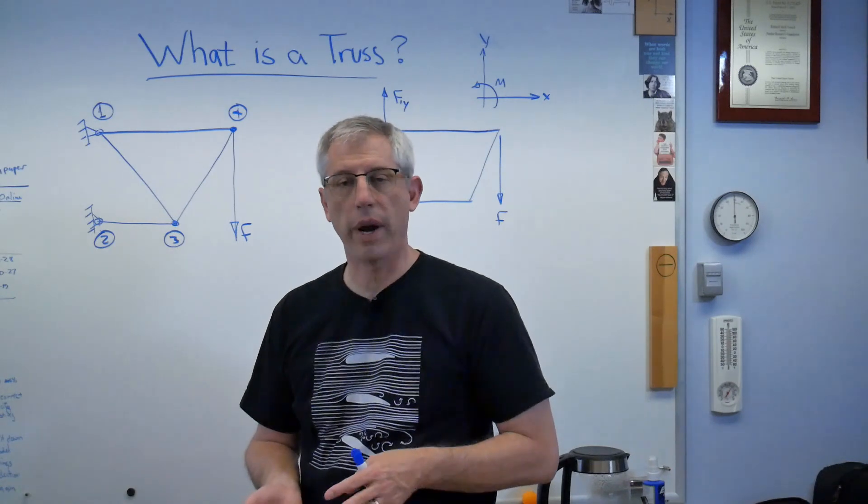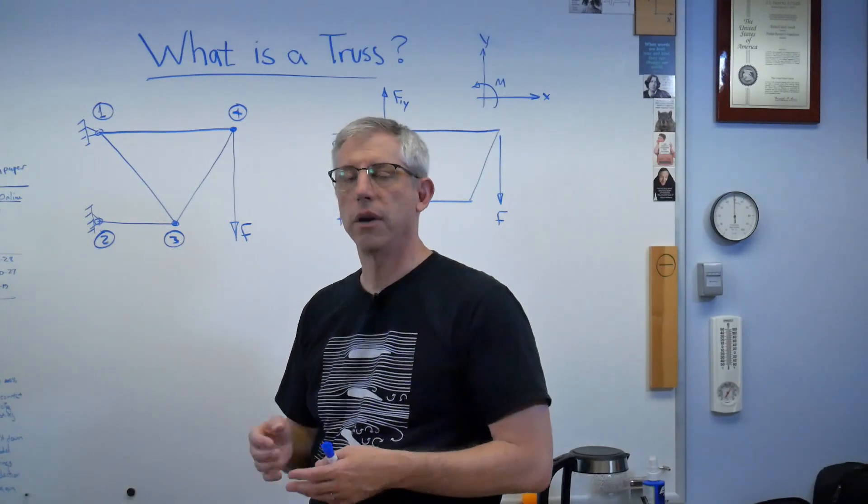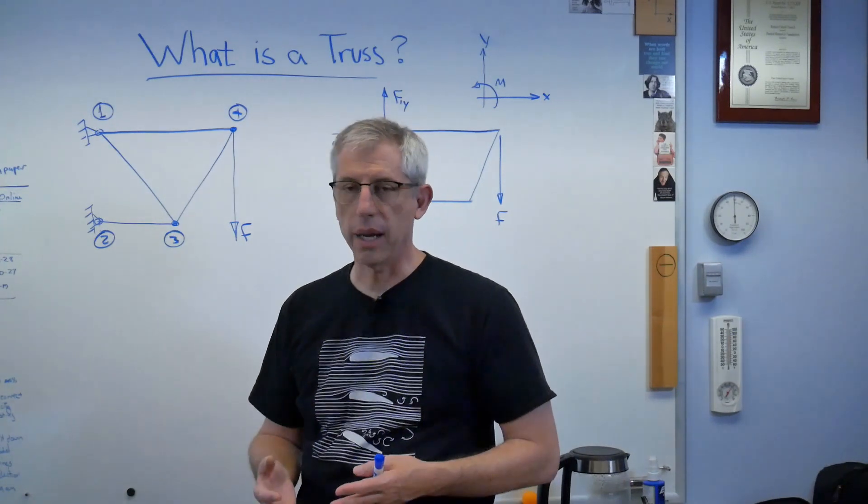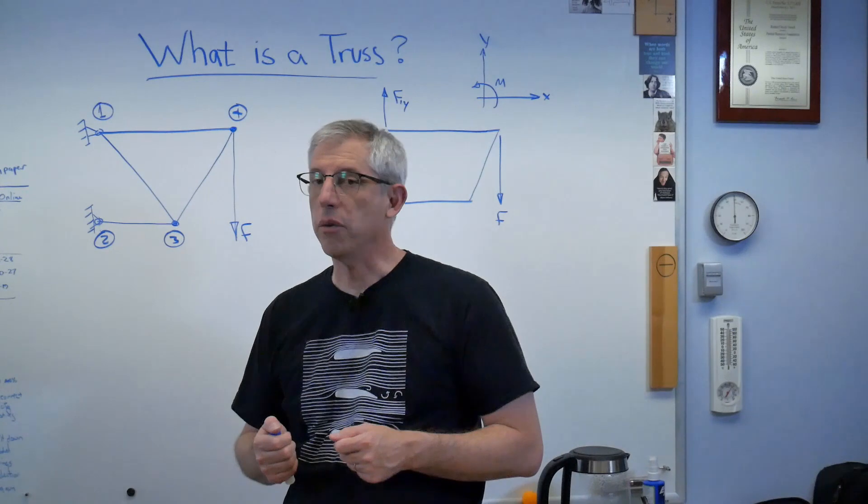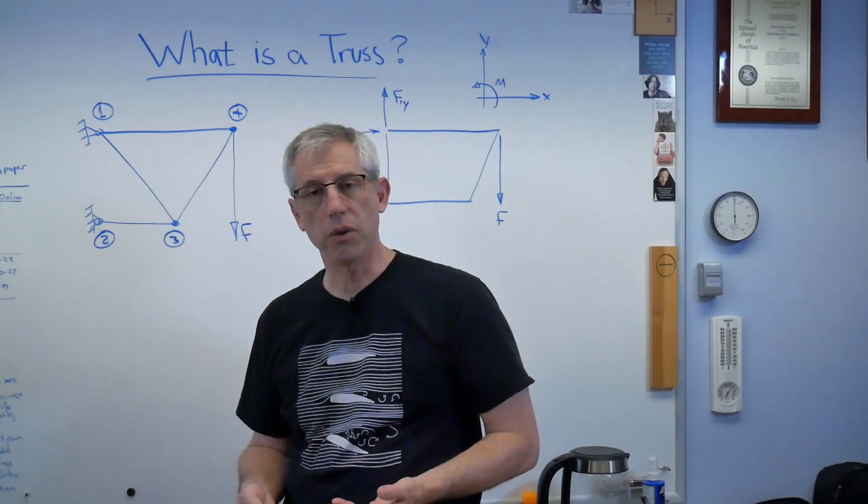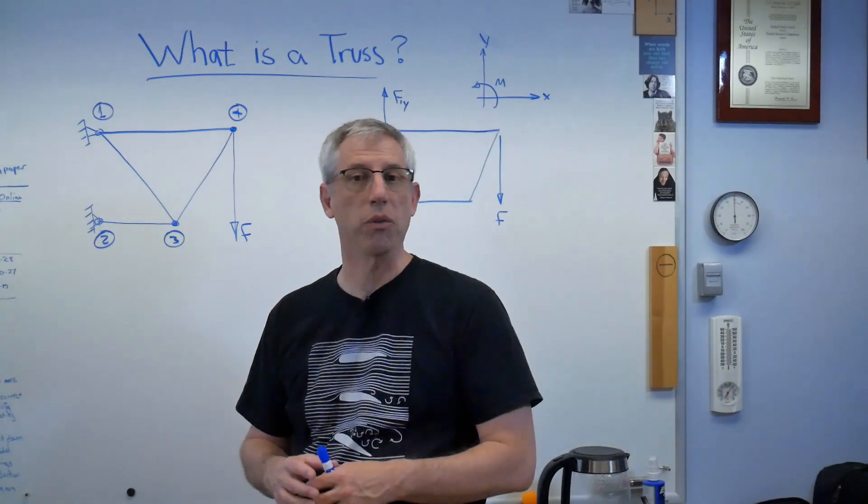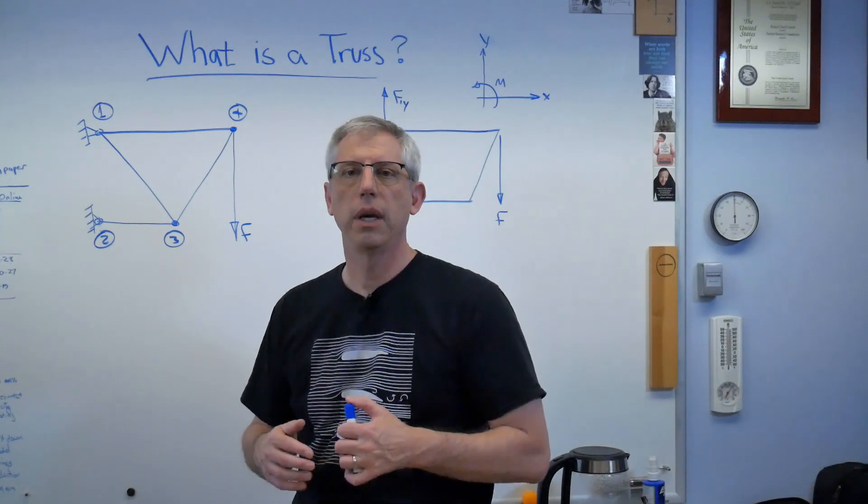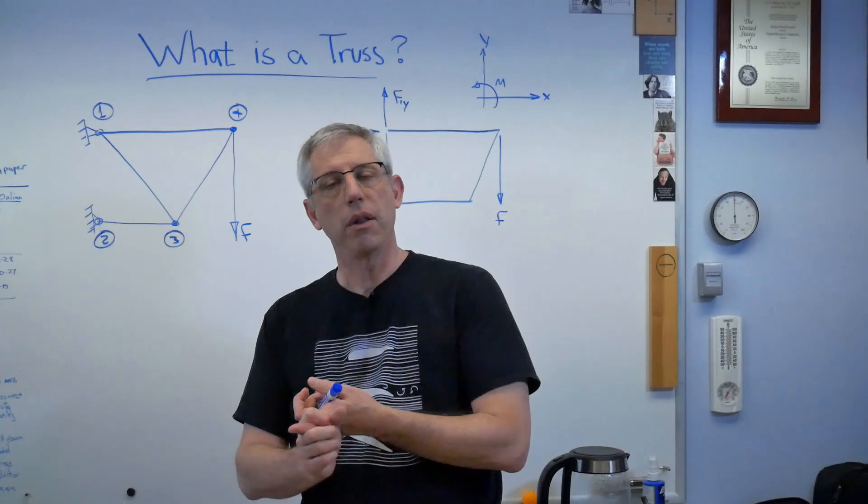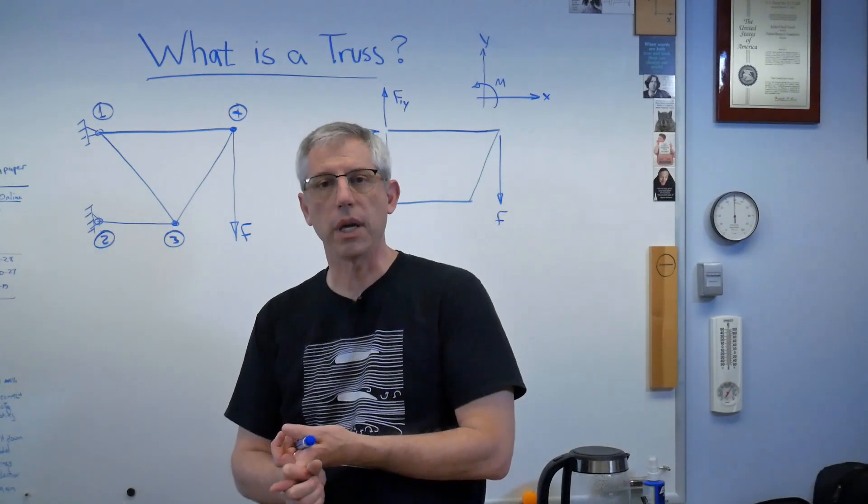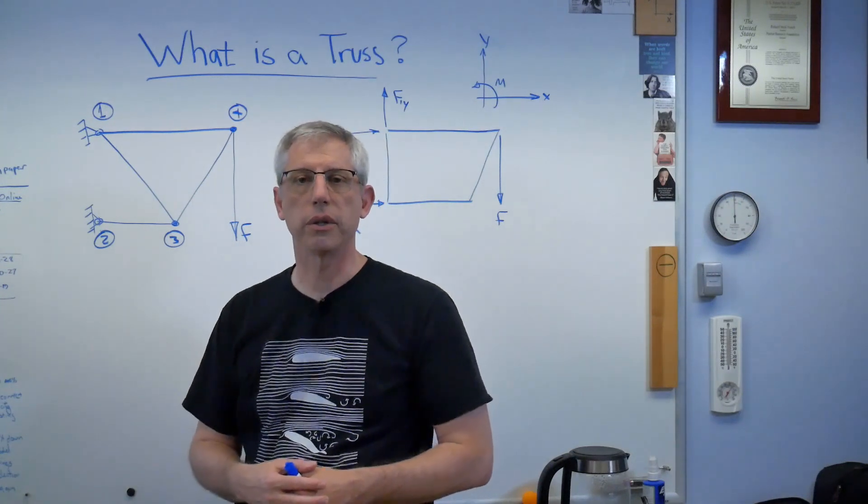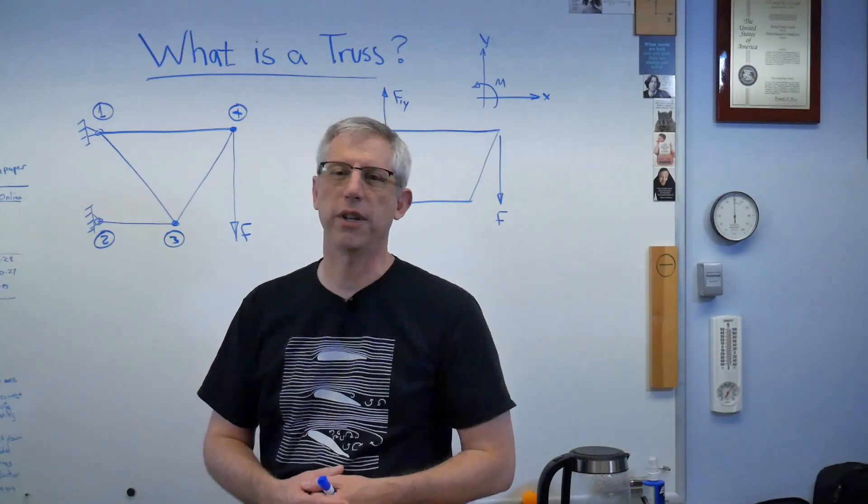So let's just review here real quick. Trusses are everywhere around us. All you have to do is start looking for them. They're in cranes, they're in buildings, they're in boats, planes, they're all over the place. They're really handy. You're able to make a fairly complicated structure out of an assembly of very simple components if you use a truss. They scale very readily. You can make really big structures out of trusses. They are mathematically fairly simple to work with. And because of that, they're one of the first things we study in statics. And we've gone through the process of how to deal with the truss structure in statics. So I hope this helps and we'll talk to you next time.